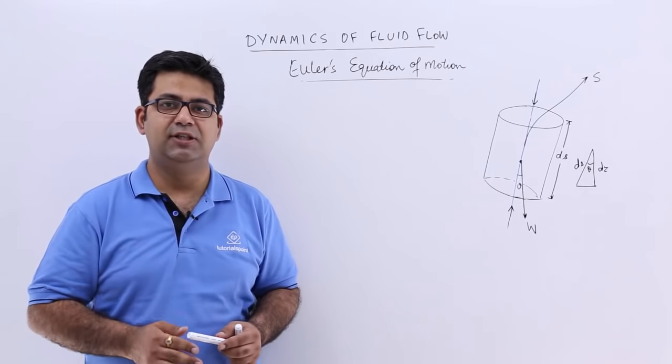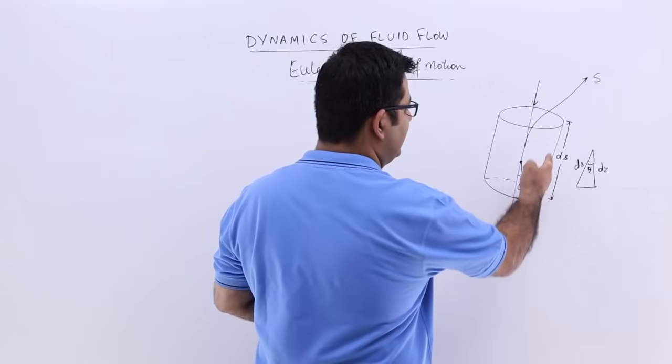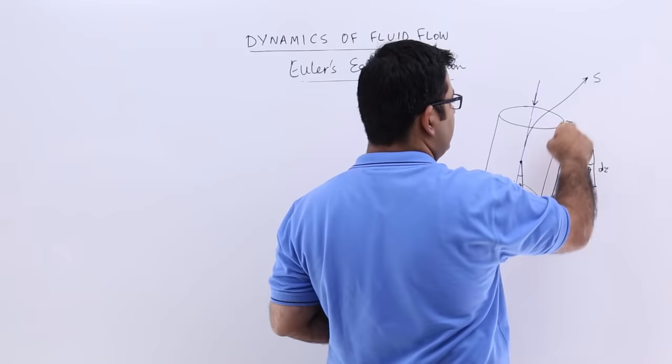Now let us derive an equation or a mathematical relation for Euler's equation of motion. We have a fluid element of length ds in which you are having a flow in the direction s. So this is the flow direction, this is how the flow is occurring.